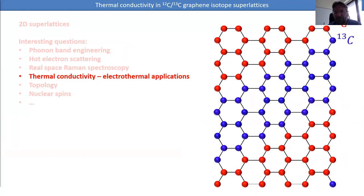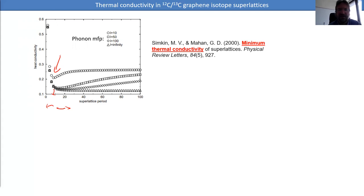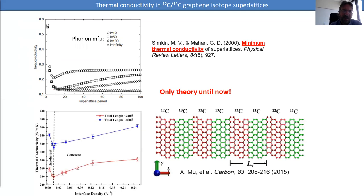I'll also mention possible applications relating to electrothermal applications — we can measure the thermal conductivity of these devices. This interest came from early work by Mahan and collaborators, who identified a minimum in heat conductivity at a certain lattice period. If you make the lattice very small, heat conductivity goes up again, and the same is true for very large periods. At large periods you have increased heat conductivity because of less scattering at interfaces; at small periods there's also an increase due to coherence in the phonon system.